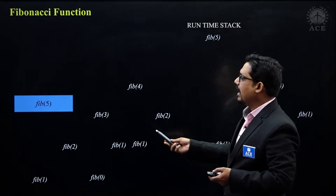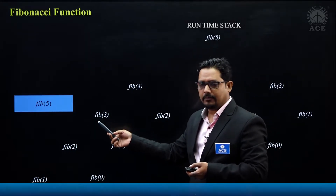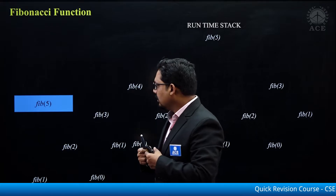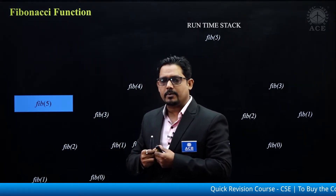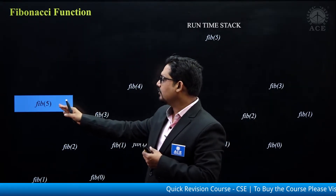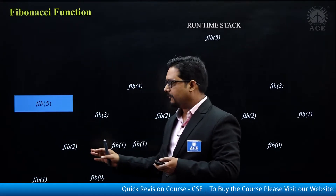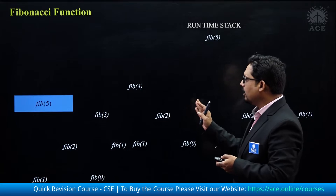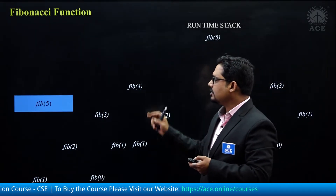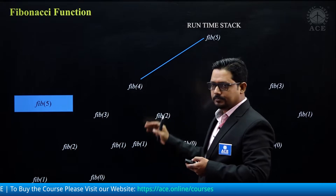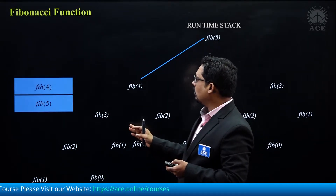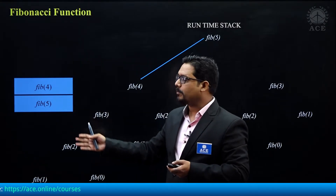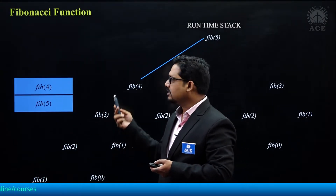There is a call for Fib5. You can assume that this is one activation record that will consist of all the information related to the execution of this function Fib5. Now Fib5 is going to call Fib4 and Fib3, but first it is going to call Fib4. The moment Fib4 is called, one activation record will be created for Fib4 and it will be pushed into the runtime stack.